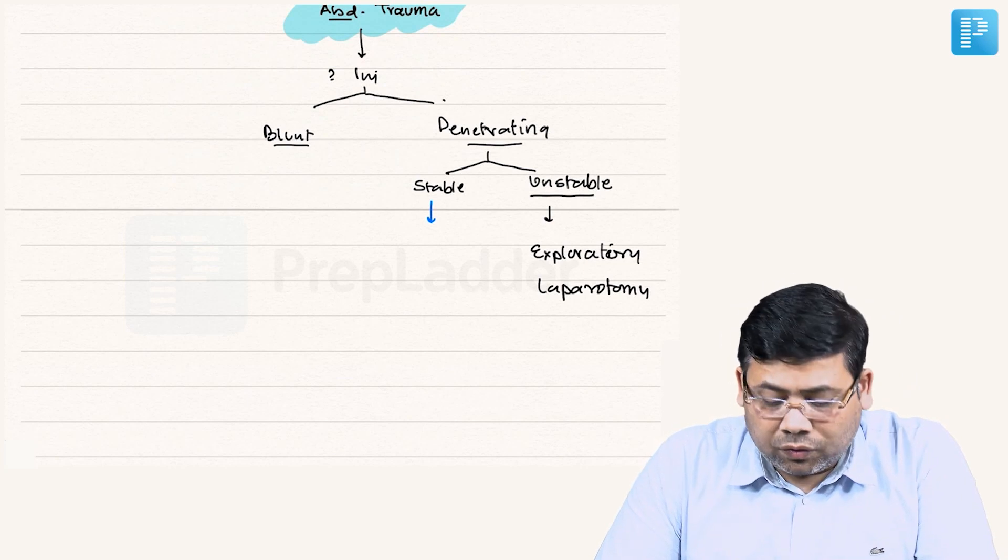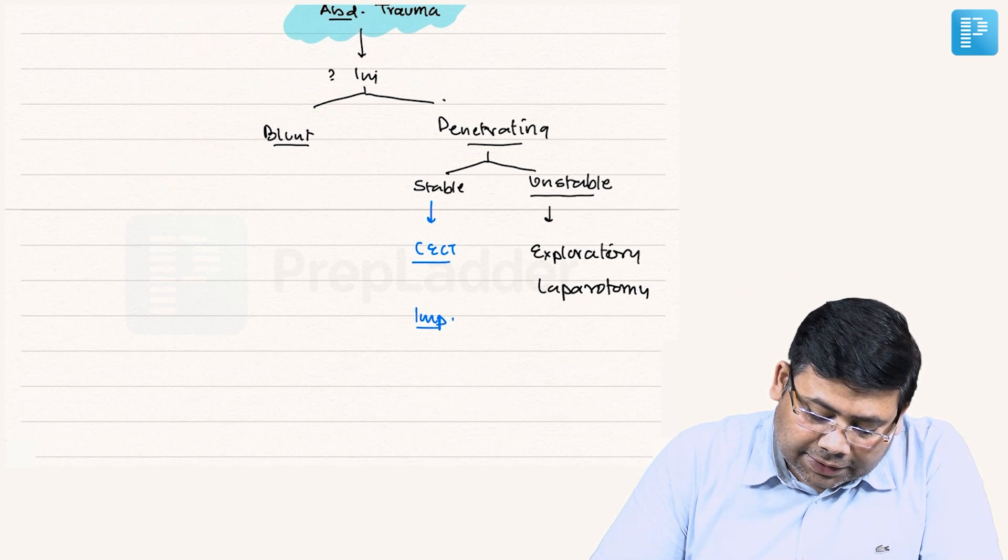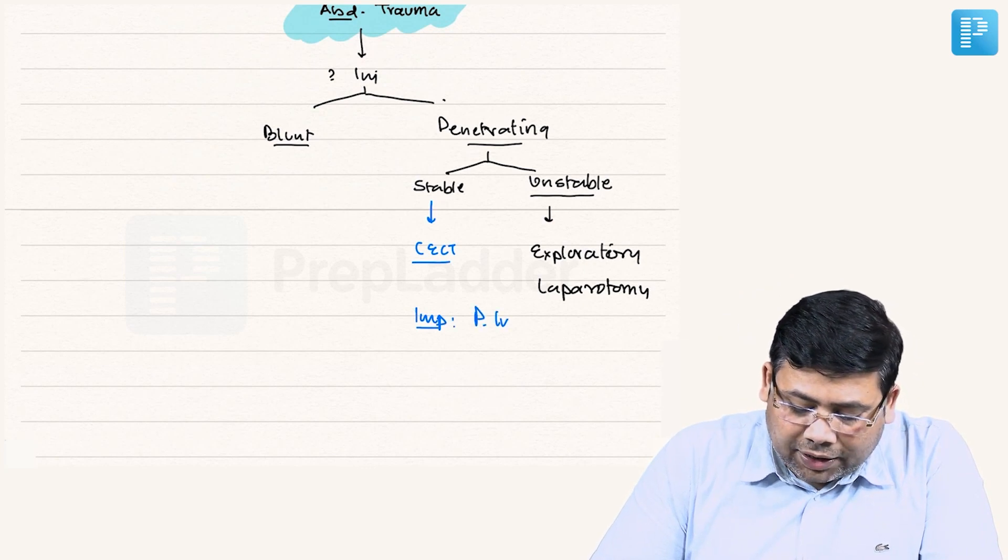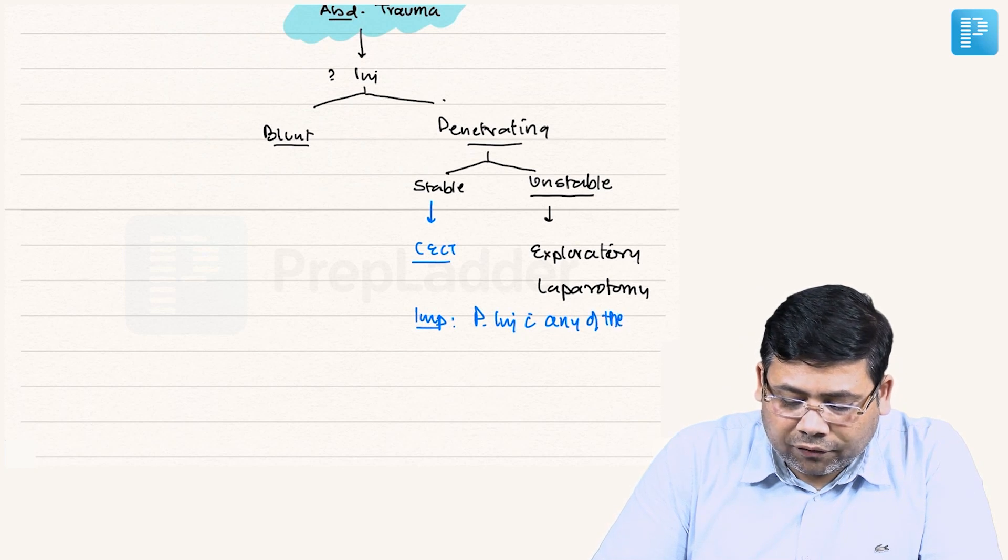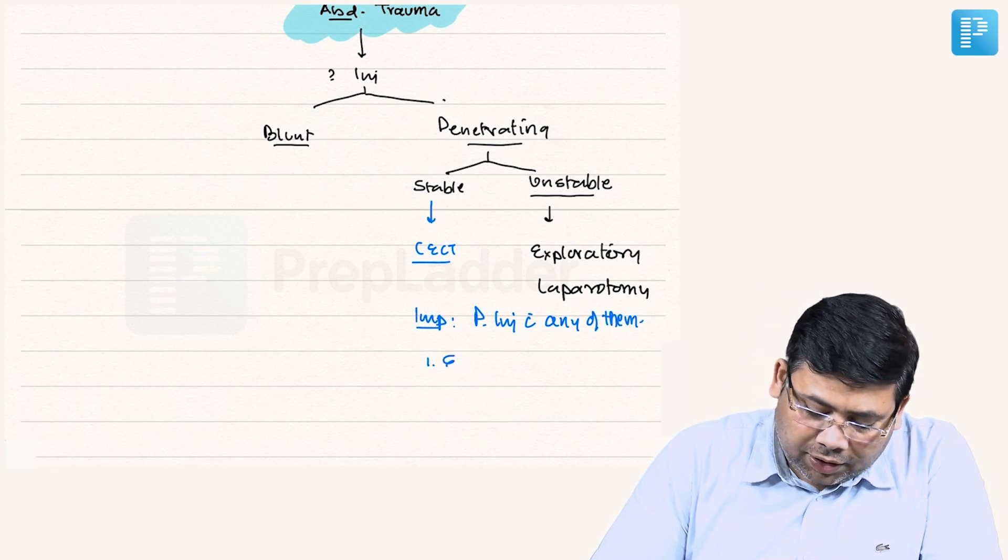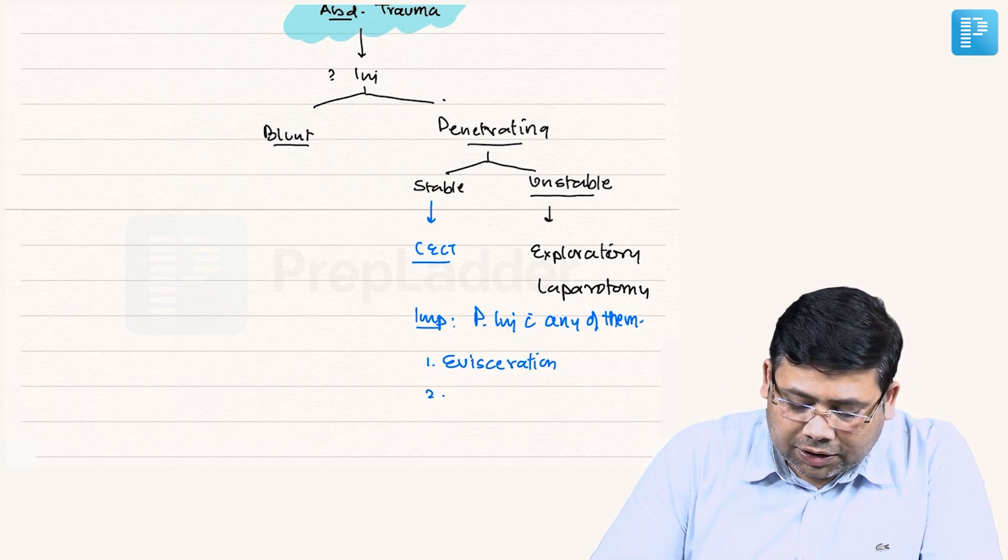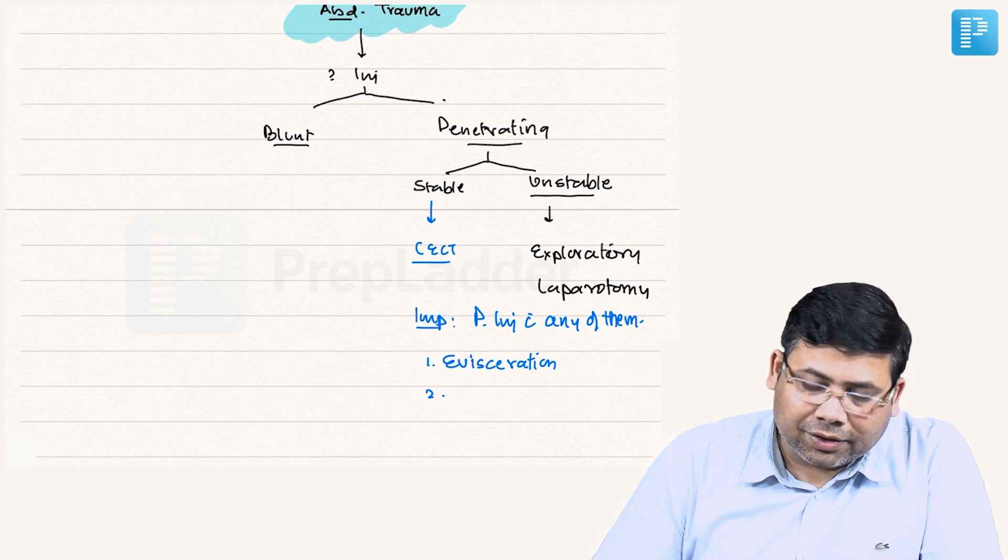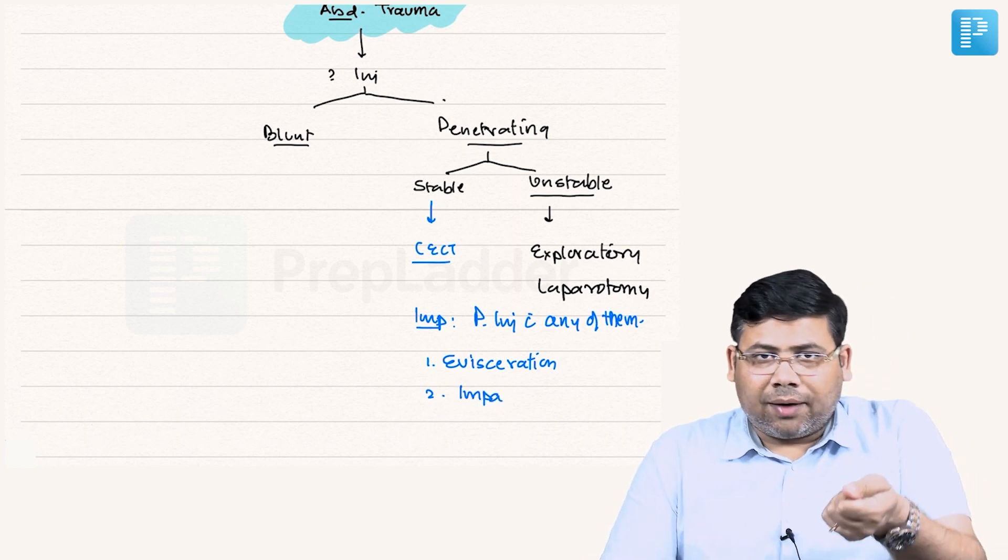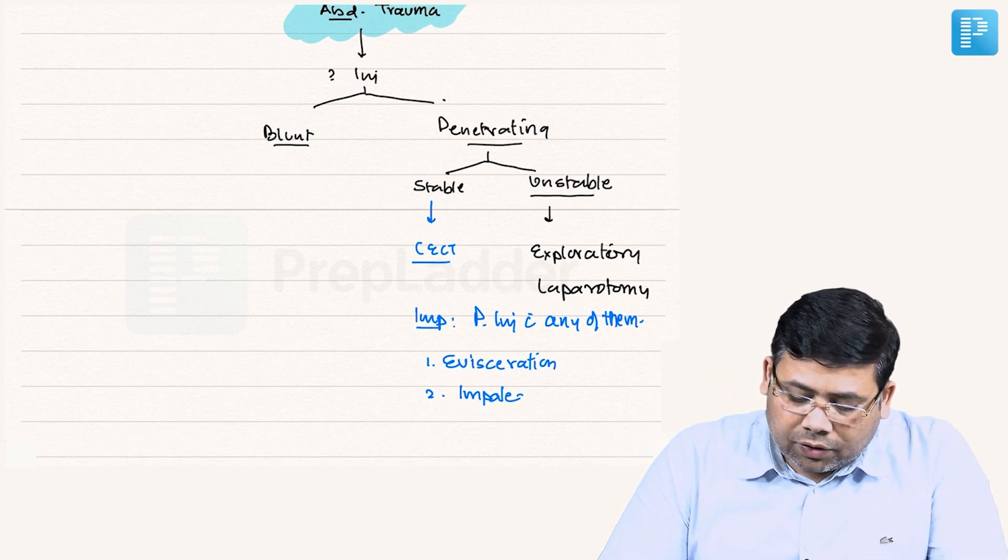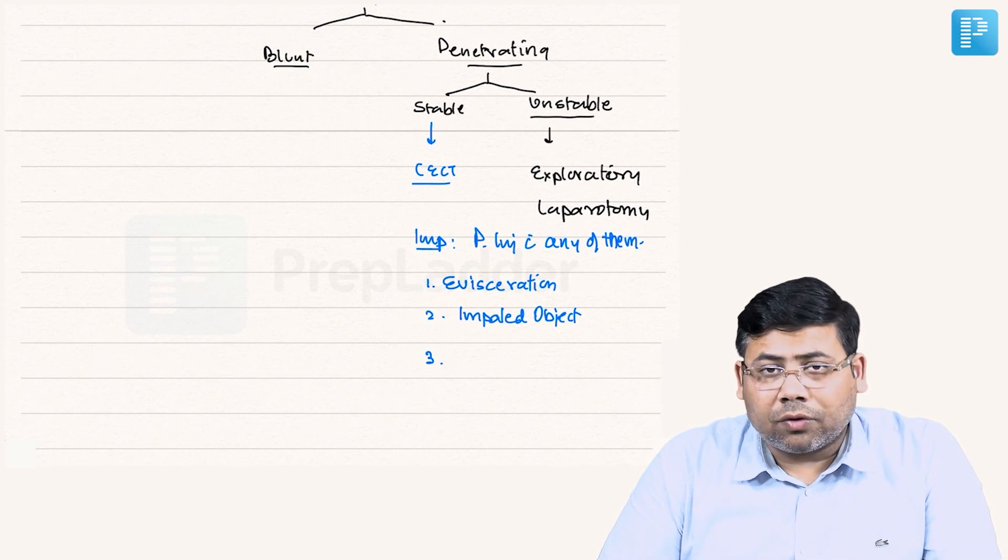You will go for CECT. Remember important things: penetrating injury with any of them. What do you mean by any of them? Point number one: evisceration - the viscera protruding out. The weapon in toto or weapon in situ, that is impaled object. That means someone stabbed and left the weapon there only. So impaled object, evisceration.